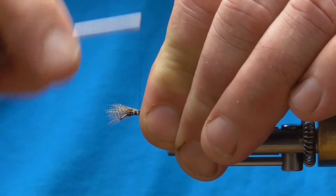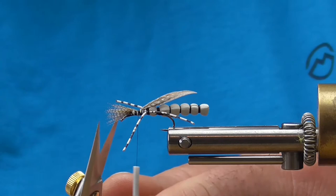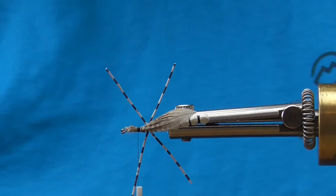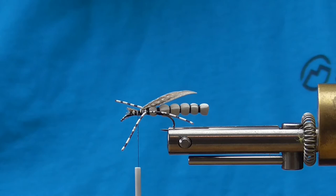And then what I'm going to do is trim this stem off right there where I've created the V and then trim up top as well. And what that's going to do is create that little wing cover or back wing that you'll see oftentimes on stoneflies or hoppers.